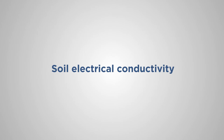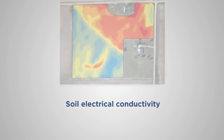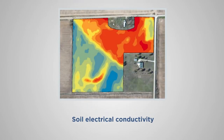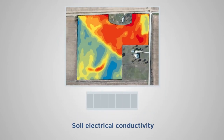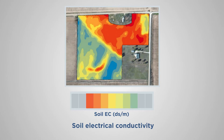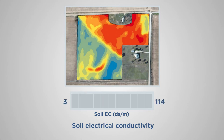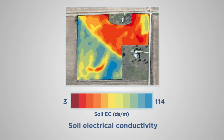Electrical conductivity was used to create soil texture maps. Electrical conductivity primarily measures soil salt concentrations, which are strongly related to soil texture. The finer the soil texture, the greater the salt concentration, resulting in greater electrical conductivity.